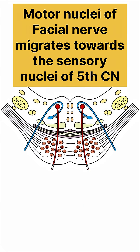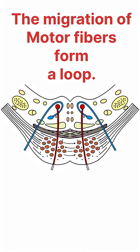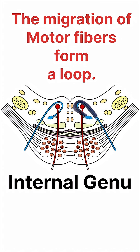The facial nerve motor nuclei migrate around the abducent nuclei to reach their permanent position in proximity to the spinal nucleus of the trigeminal nerve. During this migration, the fibers of facial nerve nuclei undergo a looped course. These looped fibers are known as the internal genu, which produces the bulging called facial colliculus.